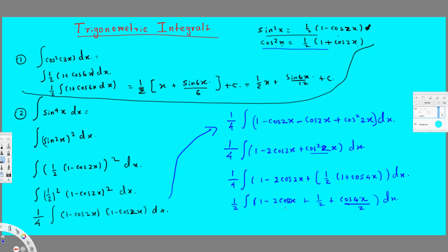Adding 1 and half together gives 3/2, so it's 1/4 times the integral of (3/2 - 2cos2x + cos4x/2) dx. Integrating, this becomes 1/4 times [3x/2 - sin2x + sin4x/8] plus constant.